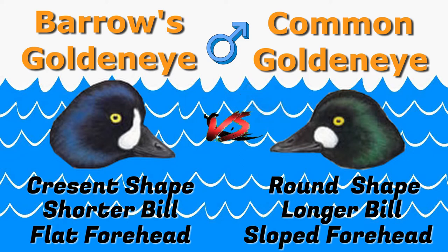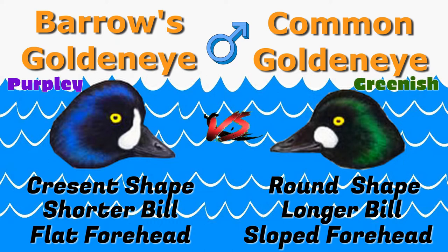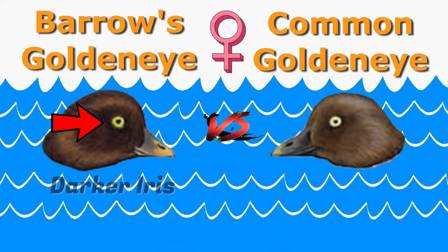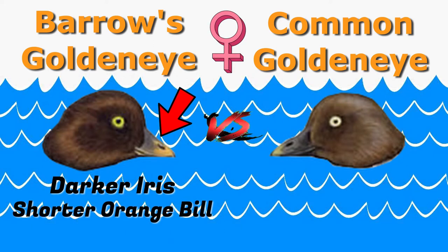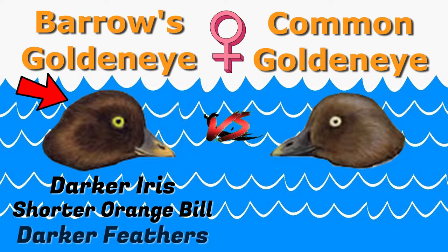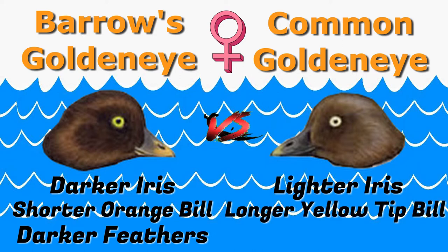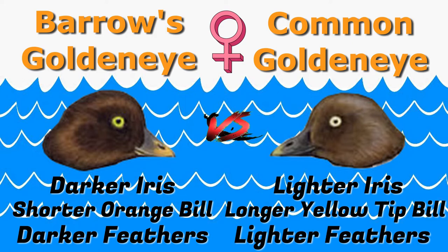And finally, in the right lighting, the Barrows golden eye has a purpley iridescent head, where the common golden eye has more of a greeny iridescent head. Now, you can tell the difference between the female golden eyes by the darker iris, the shorter and more orange bill, and the darker feathers on the head of the Barrows golden eye, versus the longer yellow-tipped bill and the lighter brown feathers on the female common golden eye.